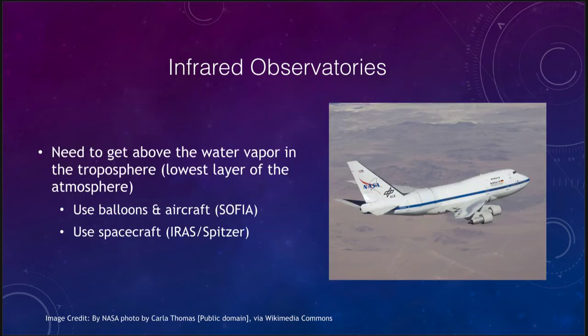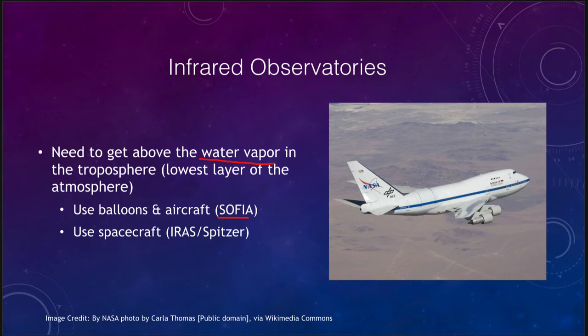Let's look first at some infrared observatories. Infrared is one of the easier ones because all we have to do is get above the water vapor in the lowest layer of the atmosphere, the troposphere. Once we are above water vapor, most of the infrared does make it to the earth — it is water vapor and other gases that absorb the infrared radiation. We've used things like balloons and the SOFIA aircraft, which can fly very high in the sky with an infrared telescope looking out at the sky and get observations that way. There are also some infrared telescopes on high mountain tops that can be used.